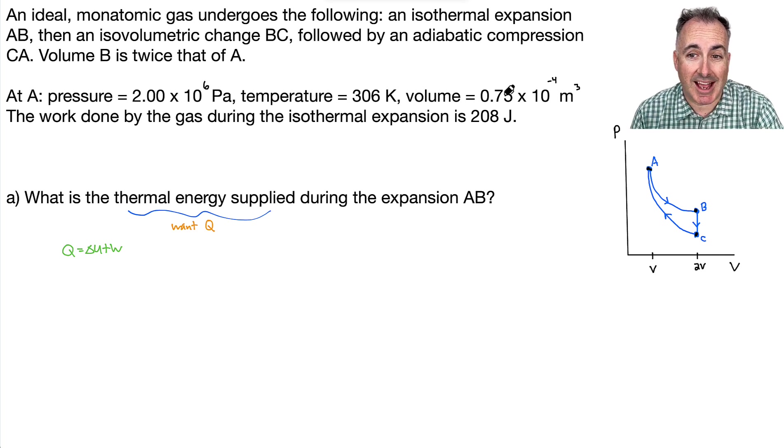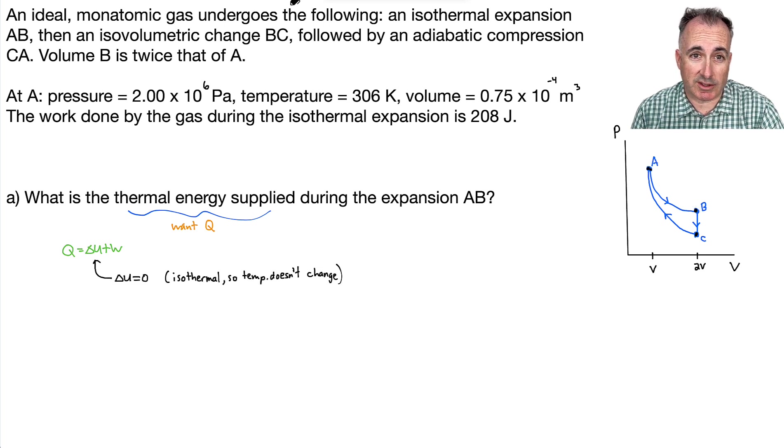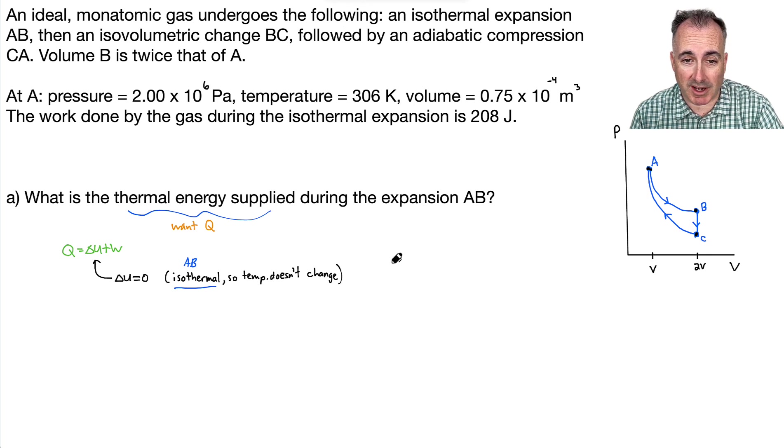Because it's isothermal. Remember, isothermal means there's no change in temperature. So just to try to make it as clear as I could, remember, this thing is isothermal from A to B, right? From A to B, it's isothermal. And what does that mean? The temperature doesn't change. And why does that matter? Well, that's because we have that equation, remember? Delta U equals 3 halves NR delta T. And if this delta T is zero, then everything else is zero.